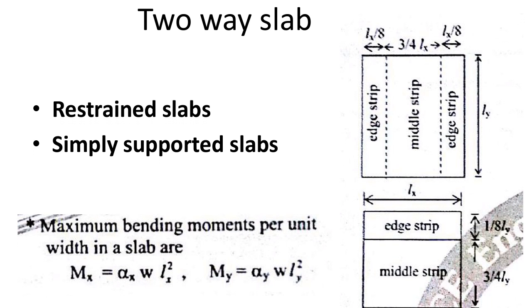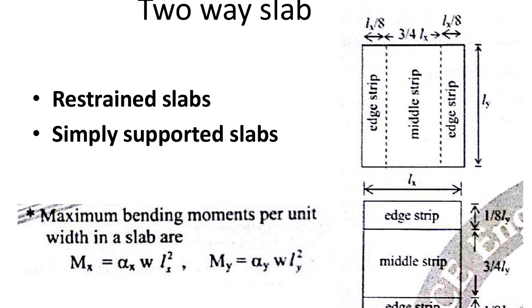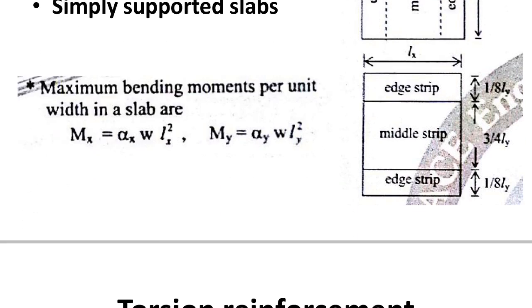For a simply supported slab, the corners are not prevented from lifting, so torsion reinforcement must be provided. The maximum bending moment formulas remain: Mx = αx · w · lx² and My = αy · w · ly², where αx and αy are coefficient values. For a restrained slab, corners are prevented from lifting and there is no need to provide torsion reinforcement.